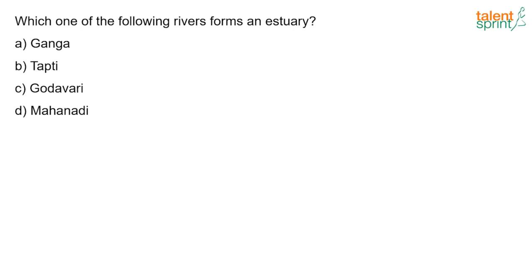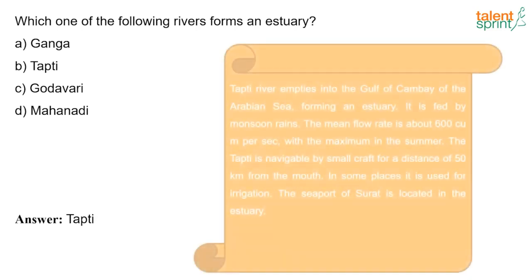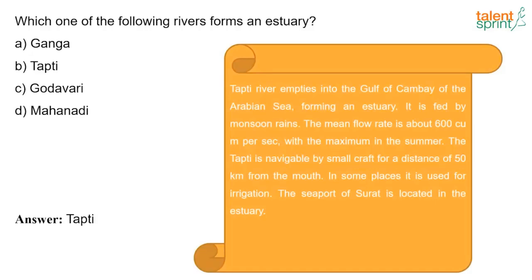Which one of the following rivers forms an estuary? The answer is Tapti. The Tapti river empties into the Gulf of Khambhat of the Arabian Sea, forming an estuary. It is fed by monsoon rains; the mean flow rate is about 600 cubic meters per second with the maximum in summer. The Tapti is navigable by small craft for 50 kilometers from its mouth, and the seaport of Surat is located in its estuary.